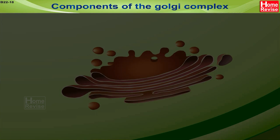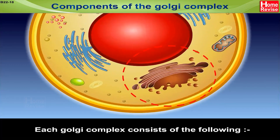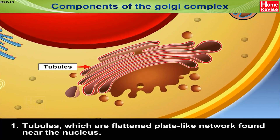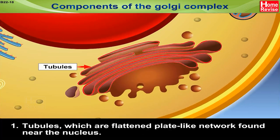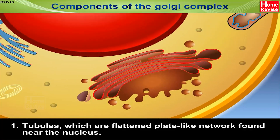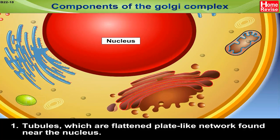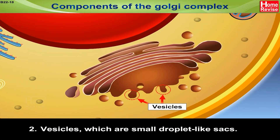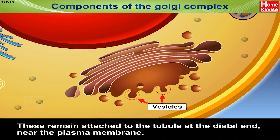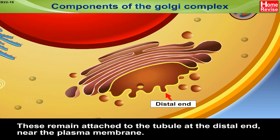Components of the Golgi Complex. Each Golgi Complex consists of the following: 1. Tubules, which are flattened, plate-like networks found near the nucleus. 2. Vesicles, which are small, droplet-like sacs. These remain attached to the tubule at the distal end near the plasma membrane.